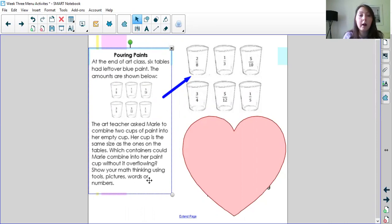The art teacher asked Marie to combine two cups of paint into her empty cup. Her cup is the same size as the ones on the tables. Which containers could Marie combine into her paint cup without it overflowing?